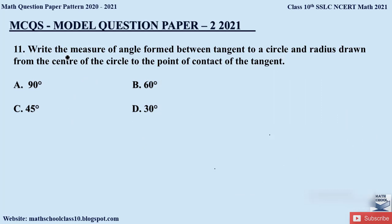Question 11: Write the measure of the angle formed between a tangent to a circle and the radius drawn from the center to the point of contact. When a radius is drawn from the center of the circle to the point of contact of the tangent, the angle formed is 90°. The correct answer is option A.